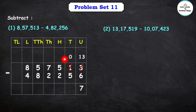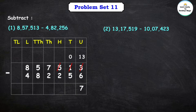Here, in the tens place, we have to subtract 5 from 0. Can we subtract? No. So what will we do? We will borrow 1 from the next digit, that is 5. After borrowing 1 from 5, the hundreds place becomes 4. The tens place was 0; now it becomes 10. So 10 minus 5 is equal to 5.